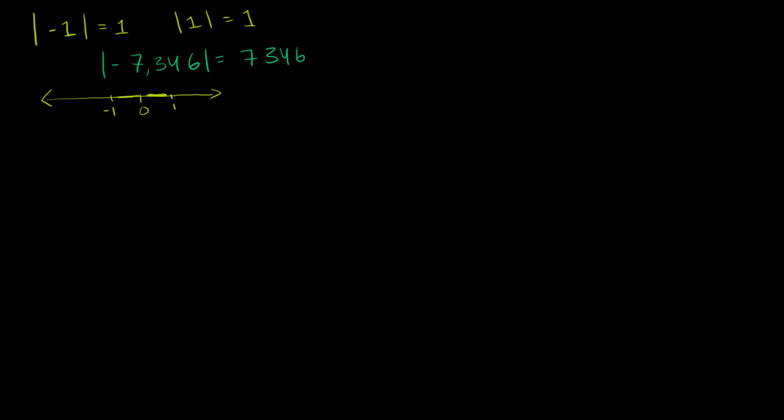Let's set up the equation: the absolute value of x minus 5 is equal to 10. One way you can interpret this is that it's saying the distance between x and 5 is equal to 10. So how many numbers are exactly 10 away from 5? You can already think of the solution, but I'll show you how to solve it systematically.